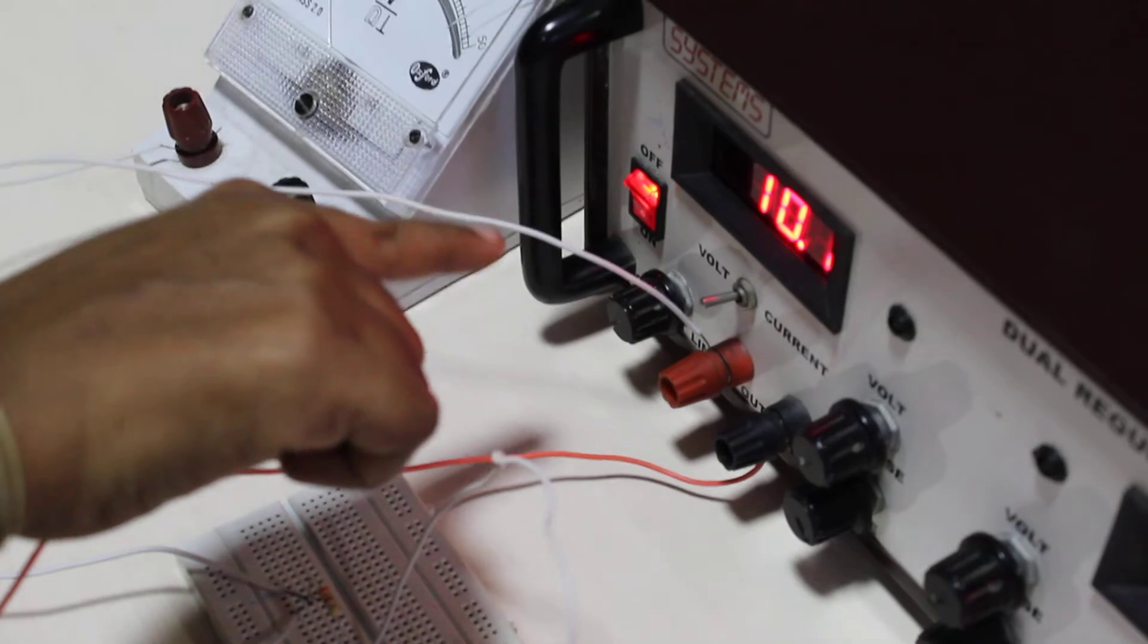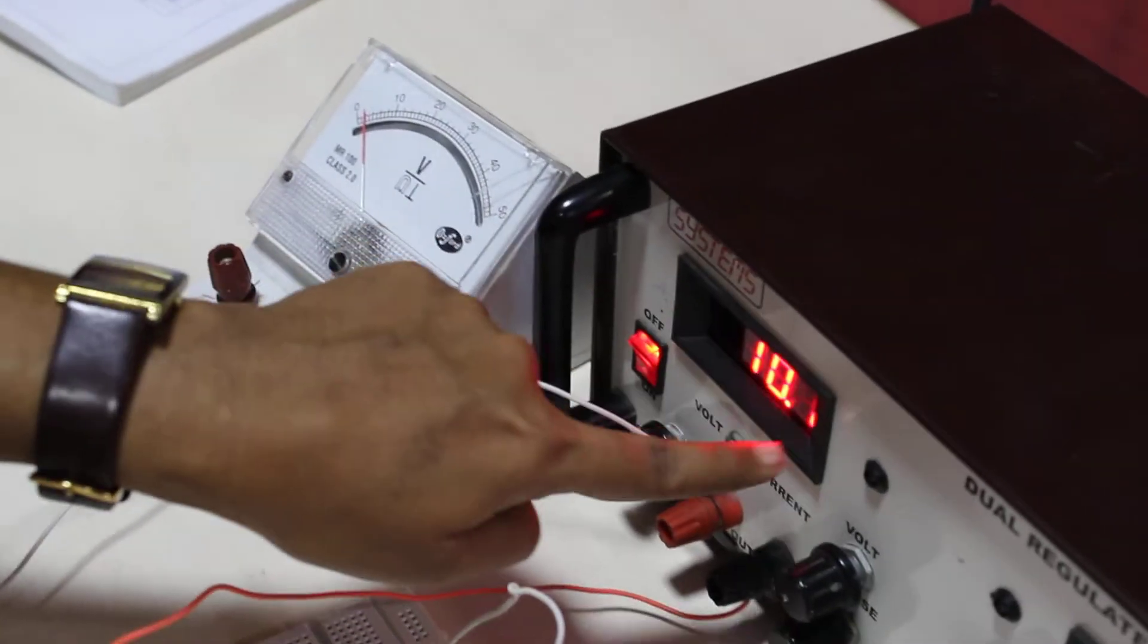As usual, you keep your voltage knob in minimum position and current knob in maximum position. The RPS has been tuned to 10 volts. Let us see the reading.